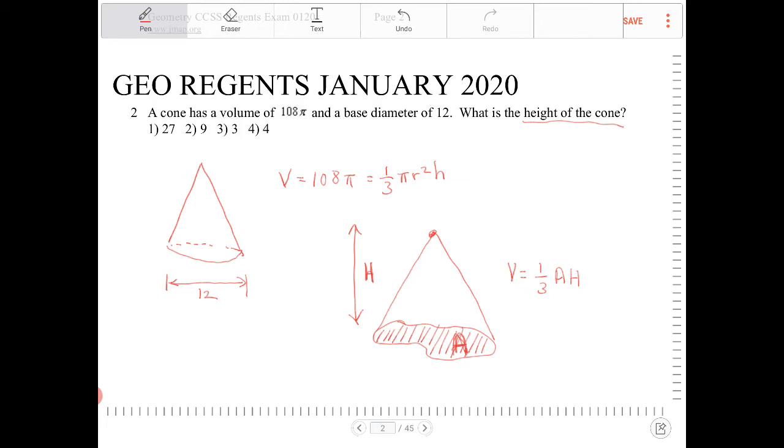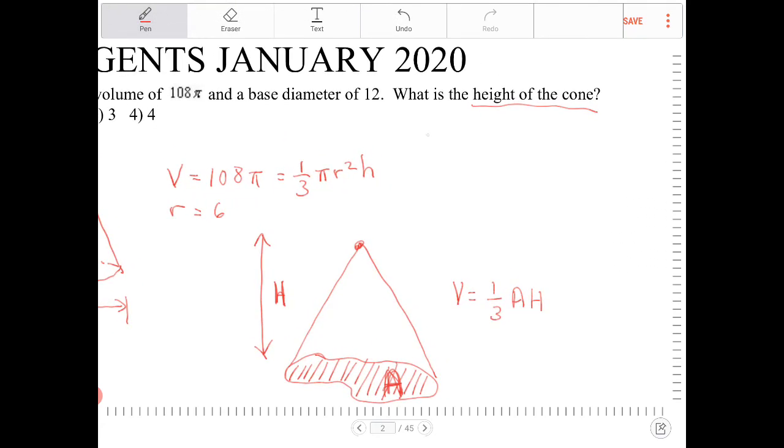So look, we have all the information here. We know that the radius equals 6. So then I can say this is really 1/3 π times 6² times h equals 108π.